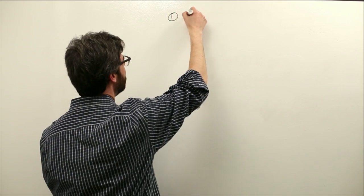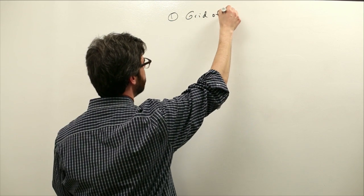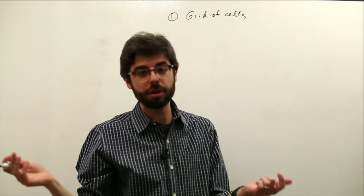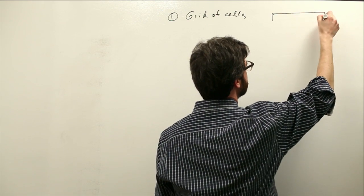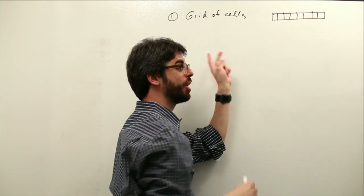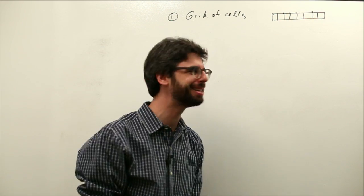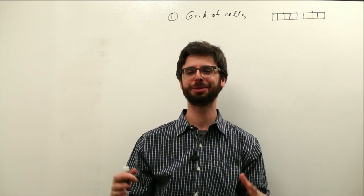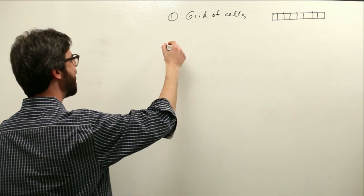A cellular automaton is a grid of cells. We're going to look at one-dimensional grids, two-dimensional grids, a one-dimensional grid, for example, just looks like this. Here are a whole bunch of cells sitting next to each other in one dimension, which incidentally looks quite a bit like the diagram for an array. So we can see how this is going to fit nicely in terms of programming these types of things.